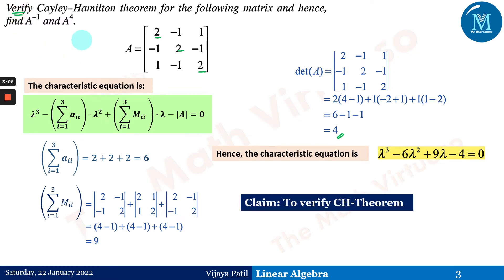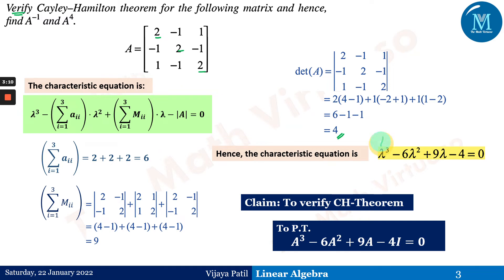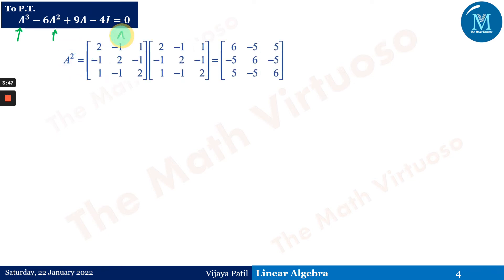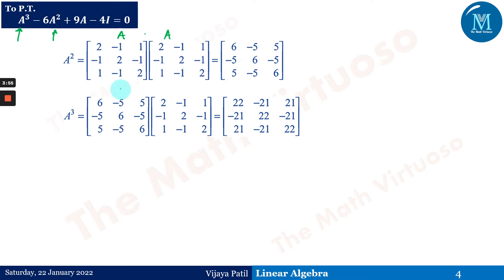Our claim for verification of CH theorem is that every λ in this equation is replaced by capital A, and the constant 4 is accompanied by I. So we need to prove that A³ - 6A² + 9A - 4I = 0. To do this we need A² and A³. A² is simply A × A by matrix multiplication, and A³ is A² × A.